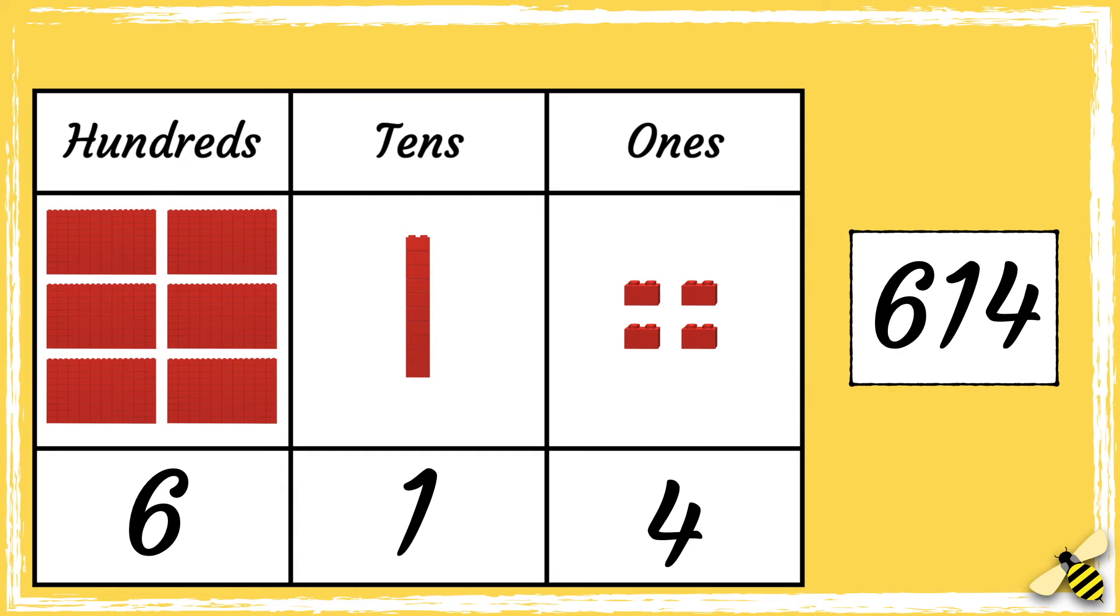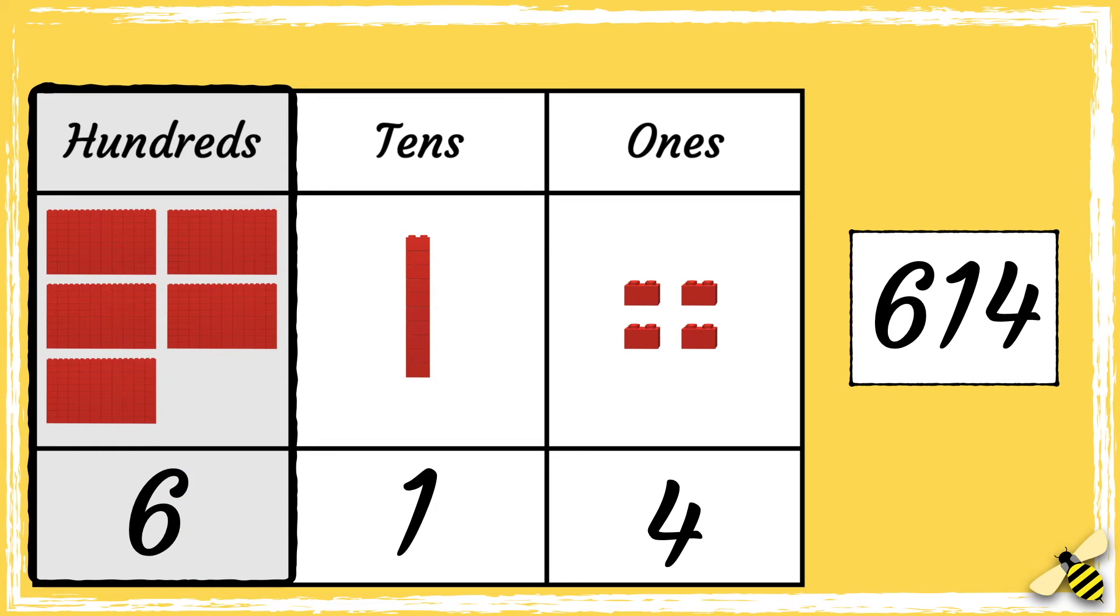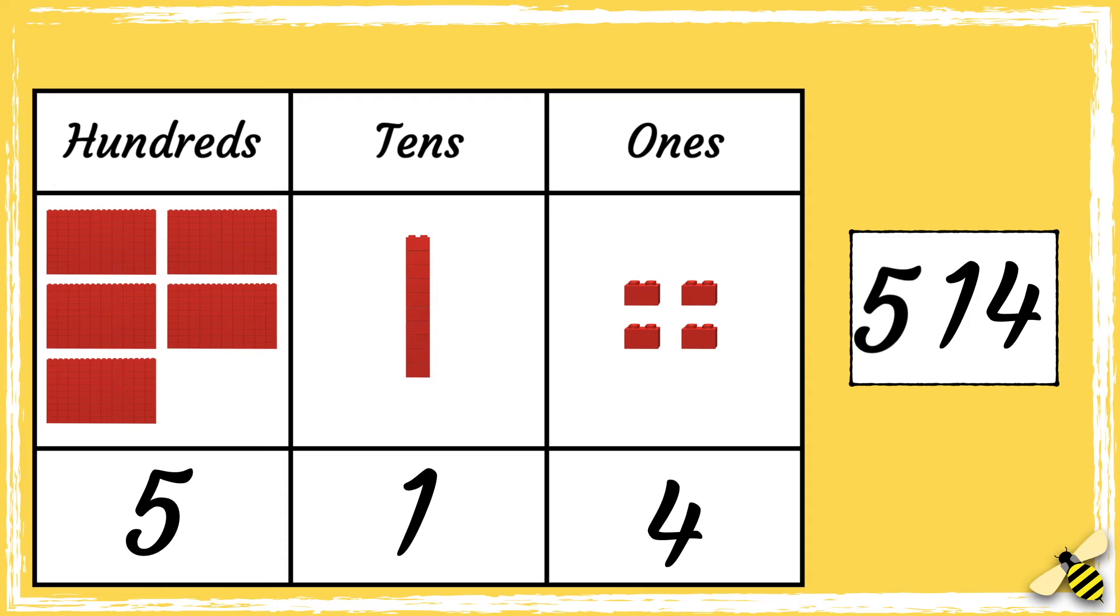Let's have a look at one more example. Here is the number 614. When we take away 100 from a number, we need to look at the hundreds column. So let's take away 100. Six hundreds becomes five hundreds, so the new number is 514.